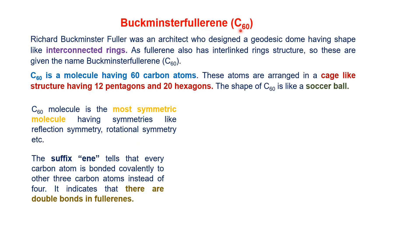Buckminster Philorene C60 is the most common type of philorene. Richard Buckminster Fuller was an architect who designed a geodesic dome having a shape like interconnected rings, just as philorene also has an interconnected ring structure. The geodesic dome has interconnected rings and the philorene also has an interconnected ring structure, which is why the name Buckminster Philorene is given to these allotropes of carbon.